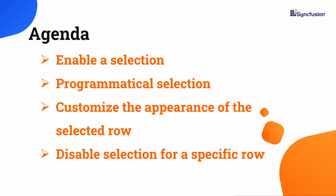I'll also show you how to enable selection, programmatically select a row, and customize the appearance of the selected row. I'll also explain how to move the current cell to a particular row and column index, clear selected rows, and disable the selection of a particular row.